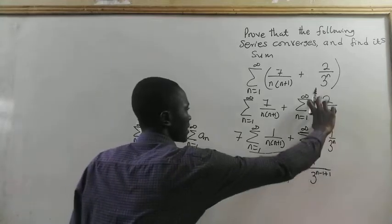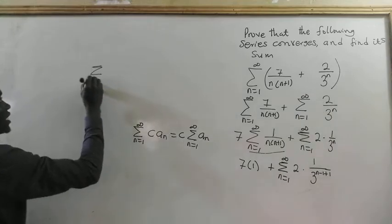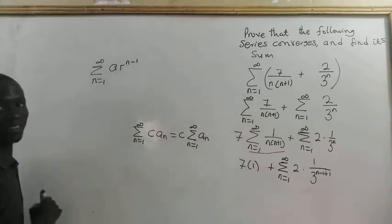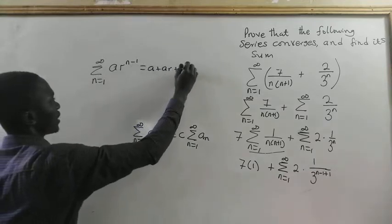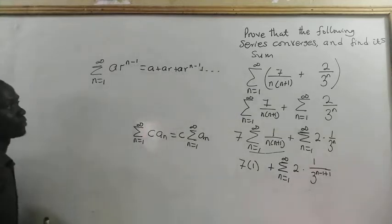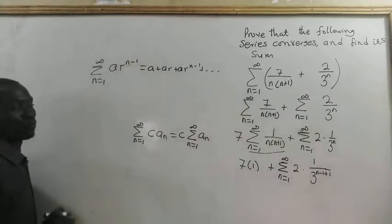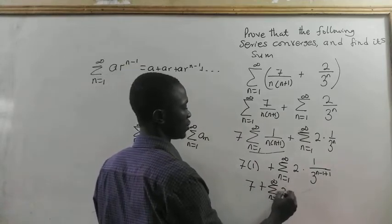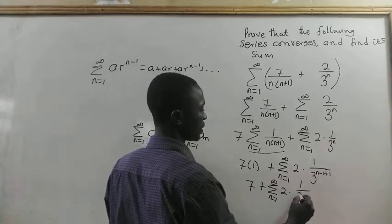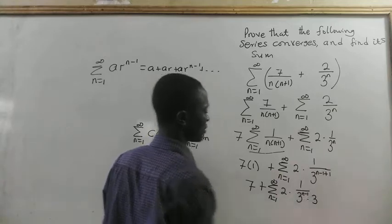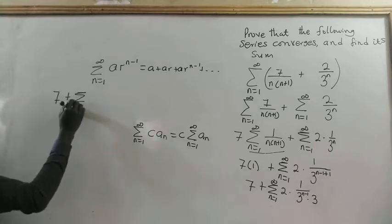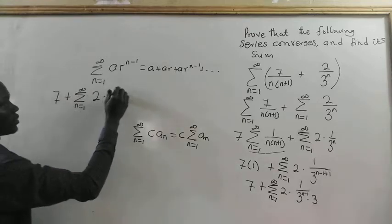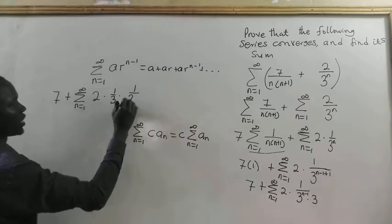Note: this is a geometric series. For a geometric series, we take the summation from n equal to 1 to infinity of a times r to the power n minus 1. We are putting this in that form. So we have 7 times 1 is 7, plus summation from n equal to 1 to infinity of 2 times (1 divided by 3) to the exponent n minus 1, times 3. This is the same as 7 plus summation of 2 times (1/3) times (1/3) to the exponent n minus 1.